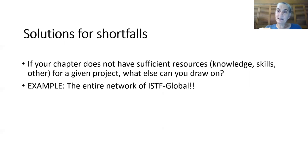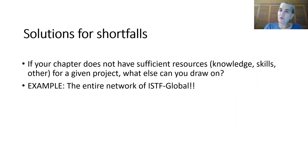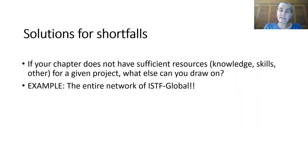Then think about solutions for the things you don't have — the gaps, the shortfalls. If you don't have a particular knowledge you need, or some skills you're lacking — like how to plant seedlings — what else can you draw on? Where can you get the information or skill set you're missing? One thing you can do is draw on the entire network of ISTF Global. For example, we have a senior resource pool — experienced foresters who are willing to share their knowledge with other members.